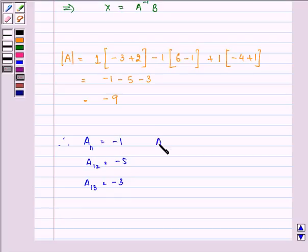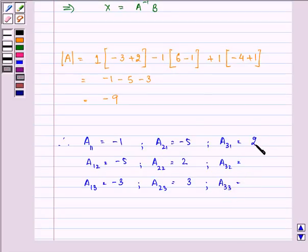Then A21 is minus 5, A22 is 2, A23 is 3, and lastly A31, A32, A33, which are minus 2, 1, and minus 3.